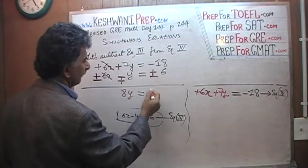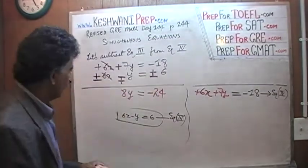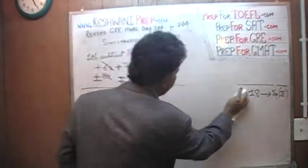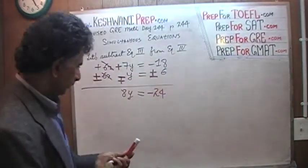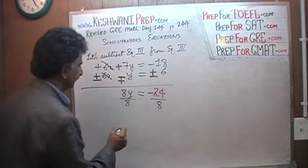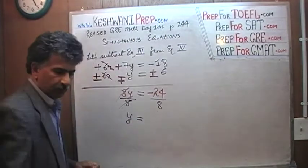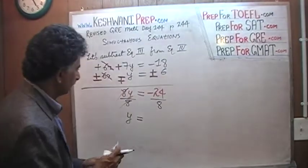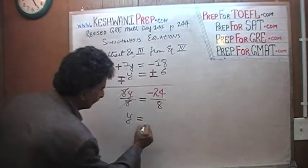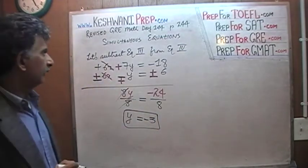Negative 18 and negative 6 gives us negative 24. So 8Y equals negative 24. Let's divide both sides by 8. The 8 drops out and Y equals negative 24 divided by 8, which gives us negative 3. Voilà — Y equals negative 3.